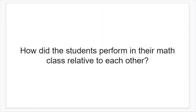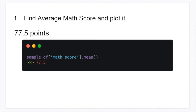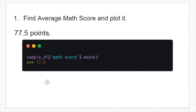So the question is, how did the students perform in their math class relative to each other? The first thing you want to do in order to start comparing is you want to find something that is fixed, that doesn't change, that we can compare their scores to. And that is the average. So the first thing we're going to do is we're going to find the average math score and plot it. In pandas, all you have to do is target the column you want — that's math score from the sample data frame — apply the dot mean method using dot notation, and it should give you 77.5. In context, the average math score is 77.5 points.